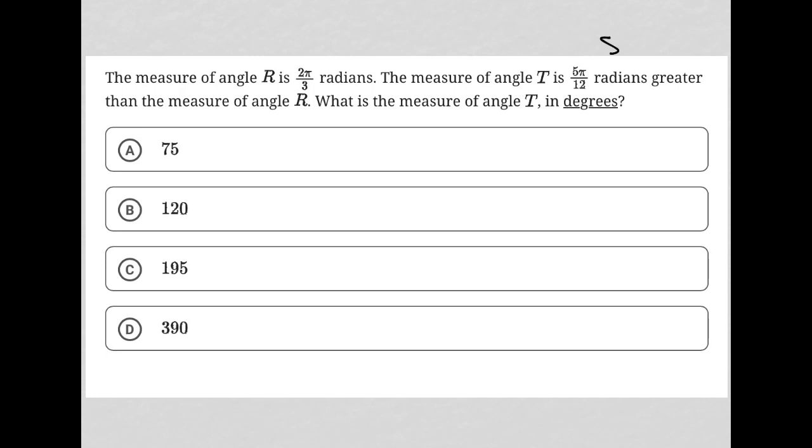I'm going to simplify. I'm going to treat this like a simplified question. It's not our typical simplified question, but I want to make sure I understand what angle T actually is because we were given some instructions for how to find it, but I want to know exactly what it is. Basically, it's saying angle T is angle R, 2π/3, plus an additional 5π/12.